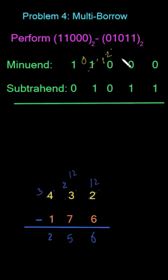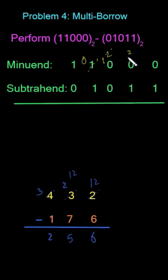As I told you, borrowing 1 from the next column to the current column in binary is equal to 2. Now I have to borrow 1 from this column to this column, so this 2 will become 1, and borrowing 1 from this column will be equal to 2 in the current column.